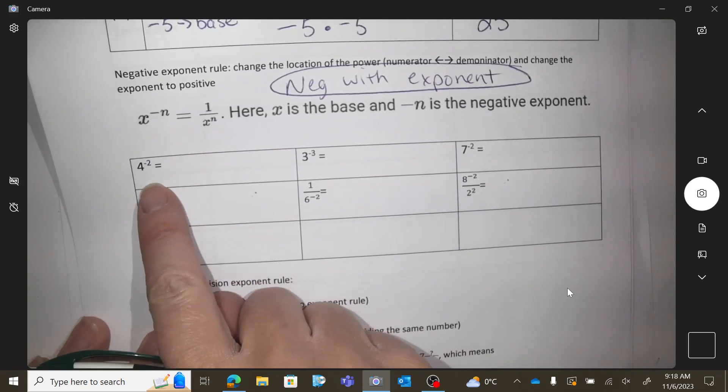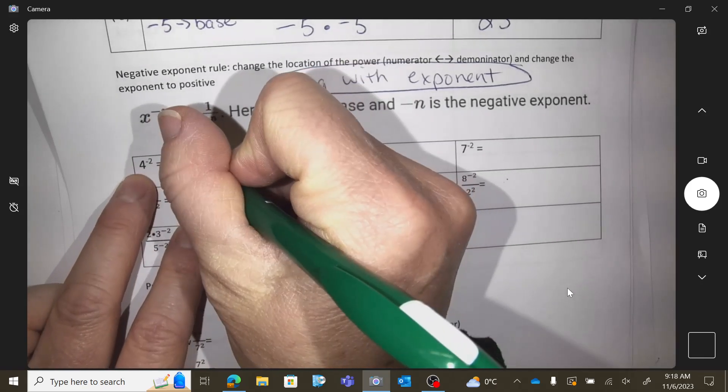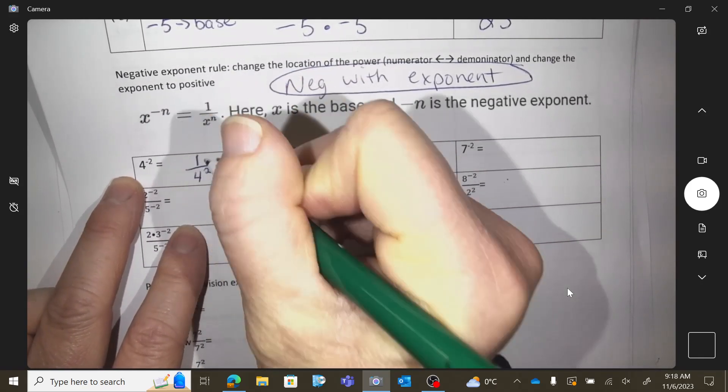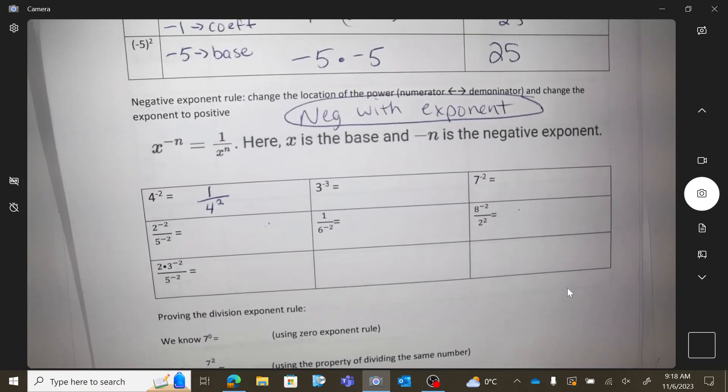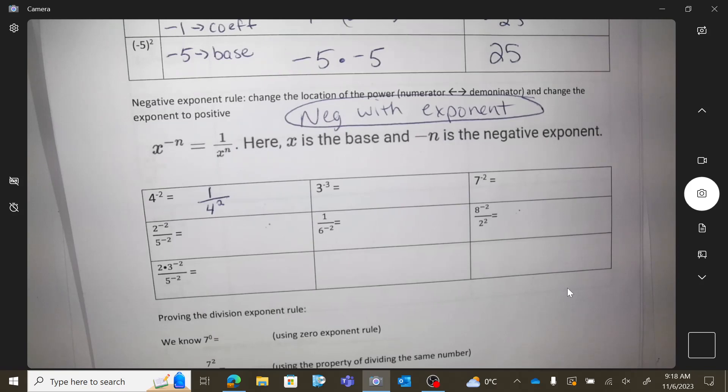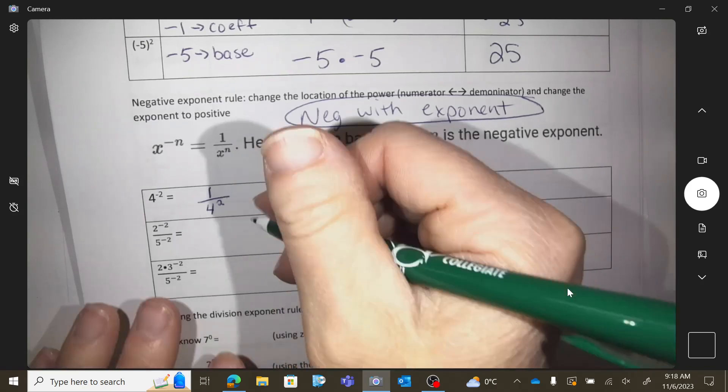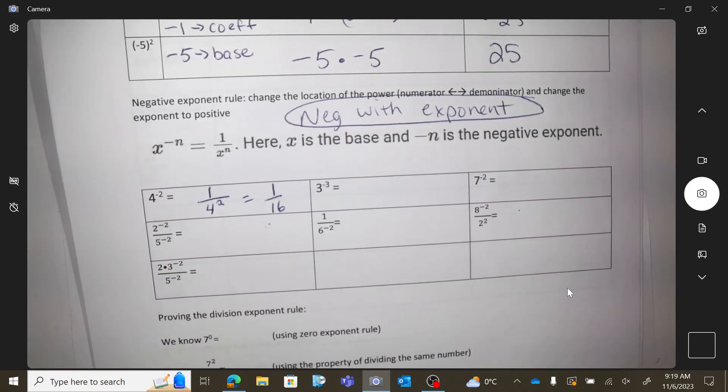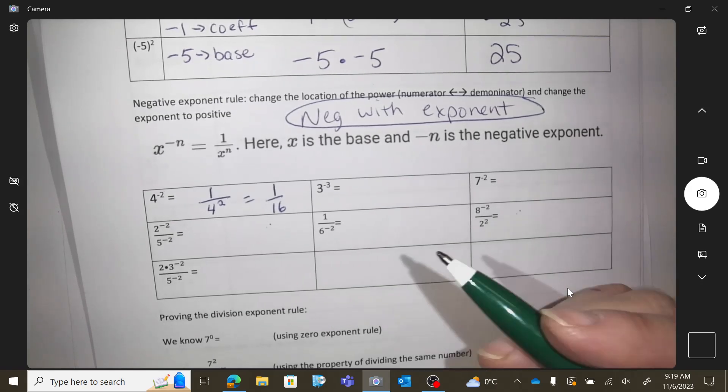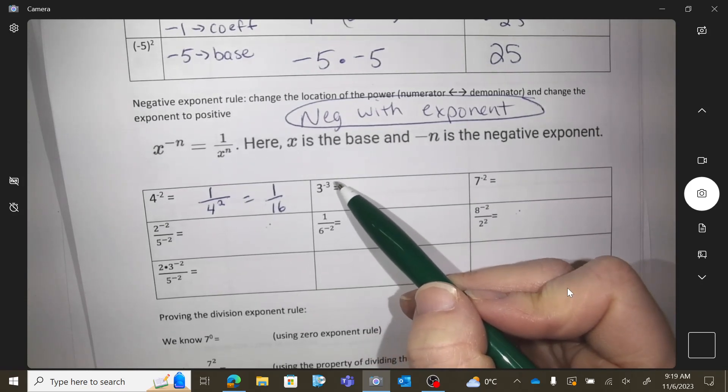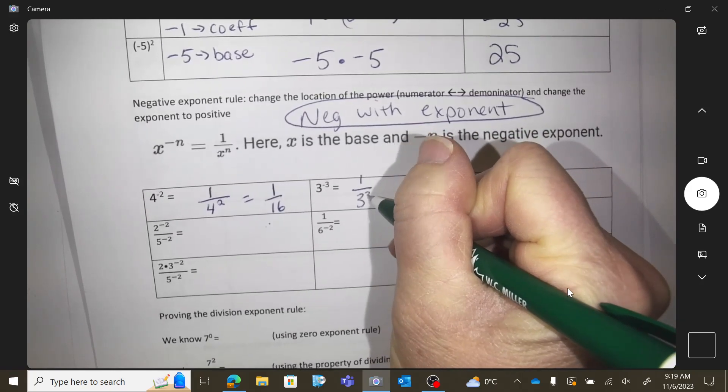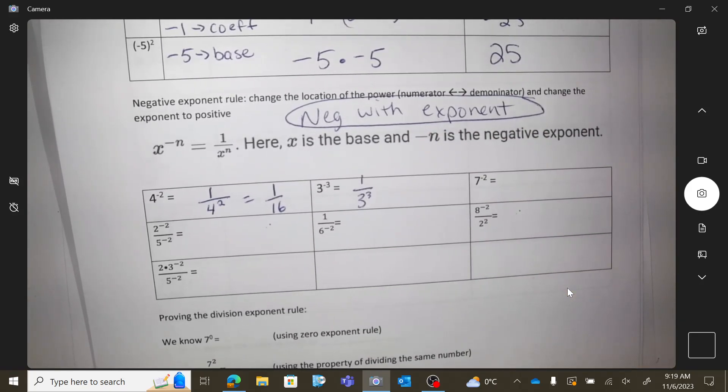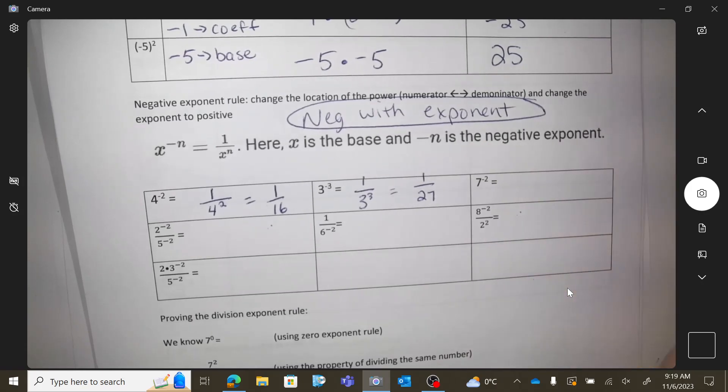So, 4 to the negative 2 would become 1 over 4 squared. So I moved it 4. That part was really on a top of a fraction, so now I moved it to a bottom, which makes 1 16th. Okay? Something to a negative exponent. So now I'm going to move it to the bottom of the fraction, where now I can turn it into a positive. So this is 1 over 27.